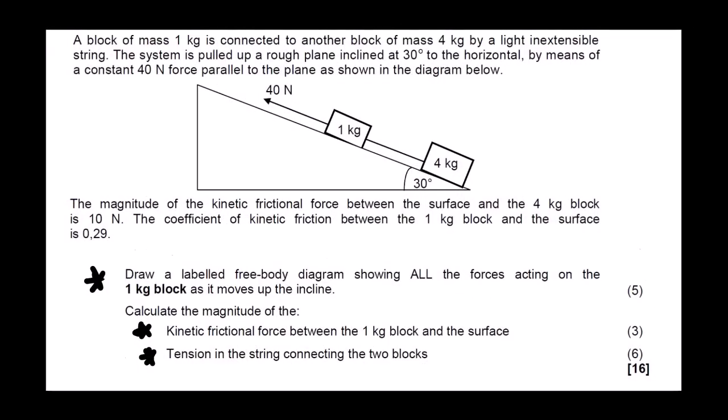Our question for today presents this type of scenario. A block of mass 1 kg is connected to another block of mass 4 kg by a light inextensible string. The system is pulled up a rough plane at 30 degrees to the horizontal by means of a constant 40 newtons force parallel to the plane, as shown in the diagram. So we have two objects connected by a string, and then there's a force applied to one of the objects.